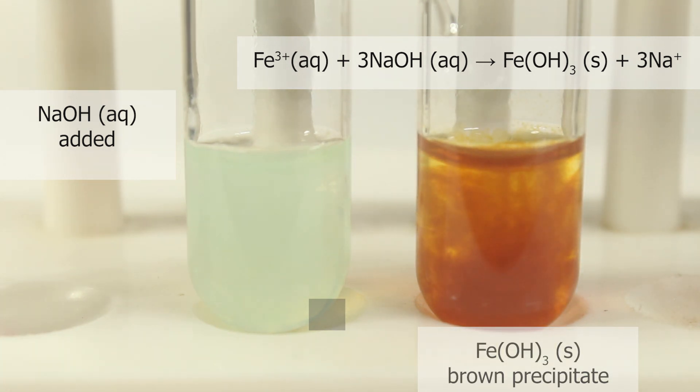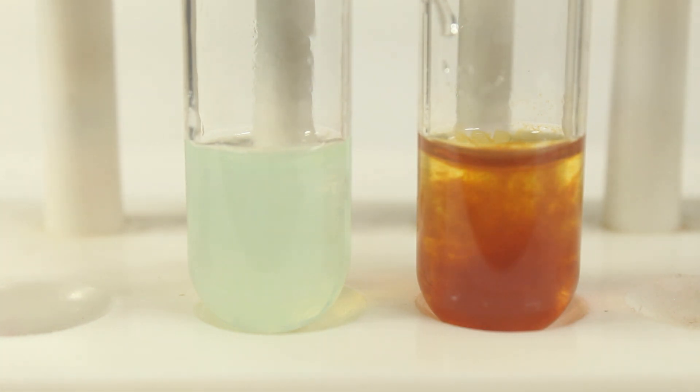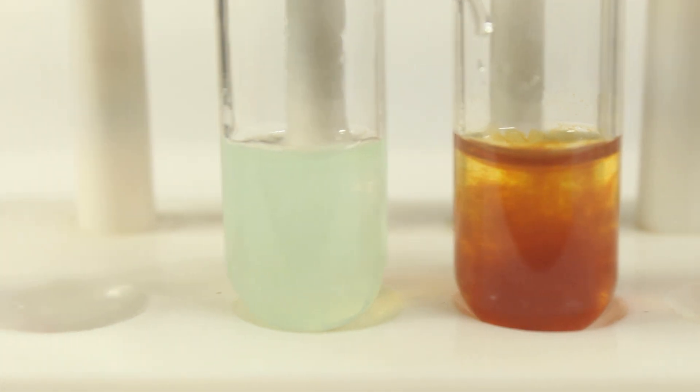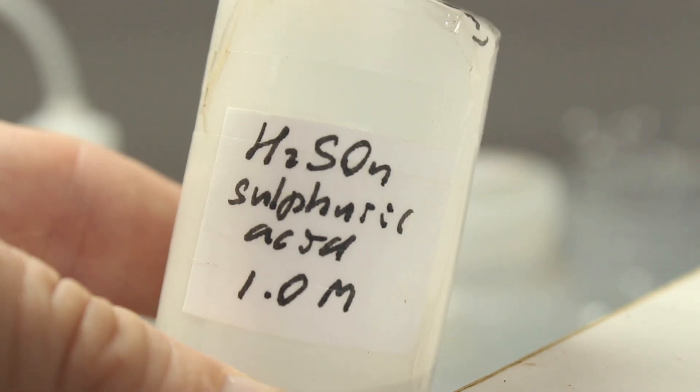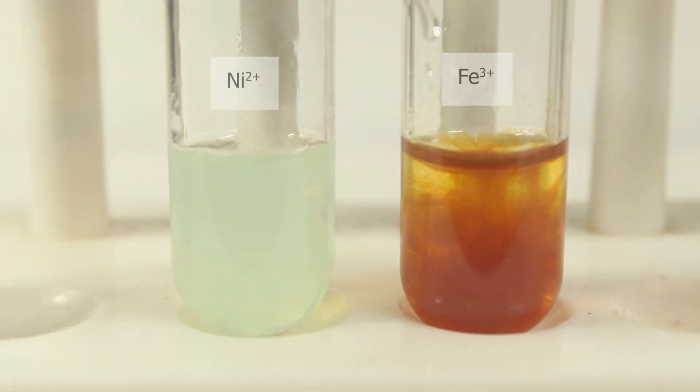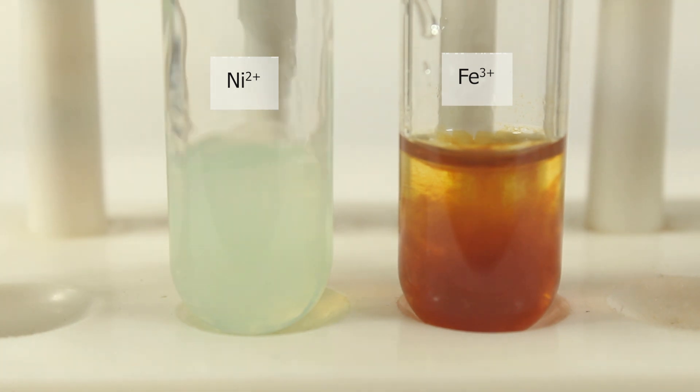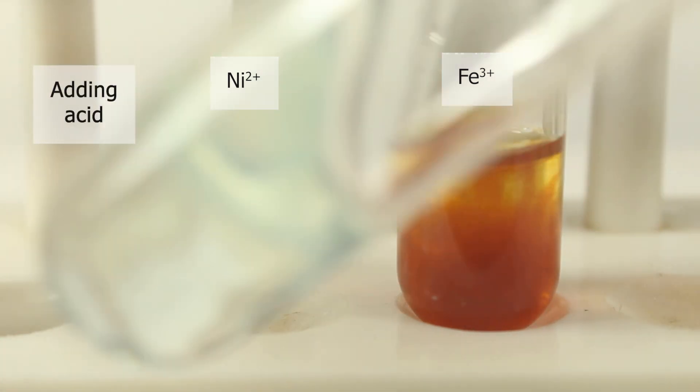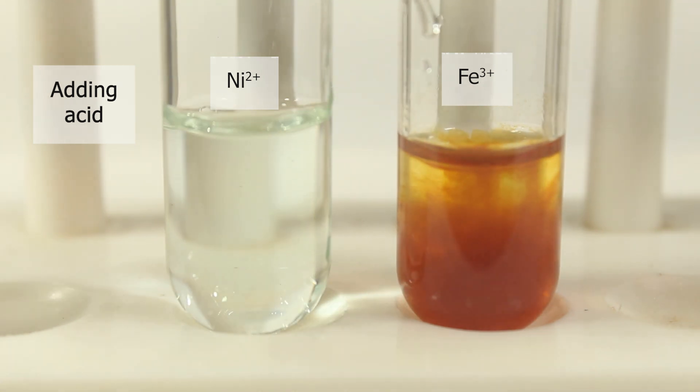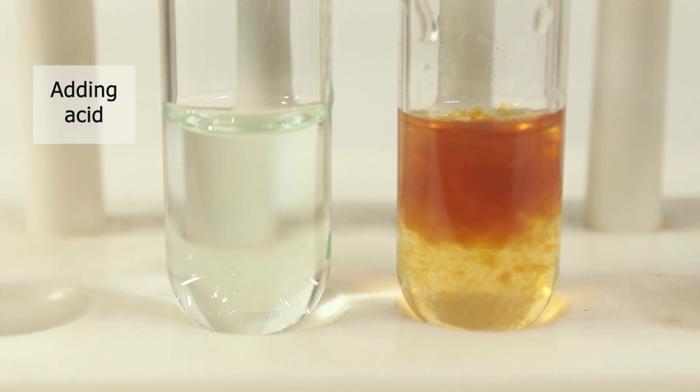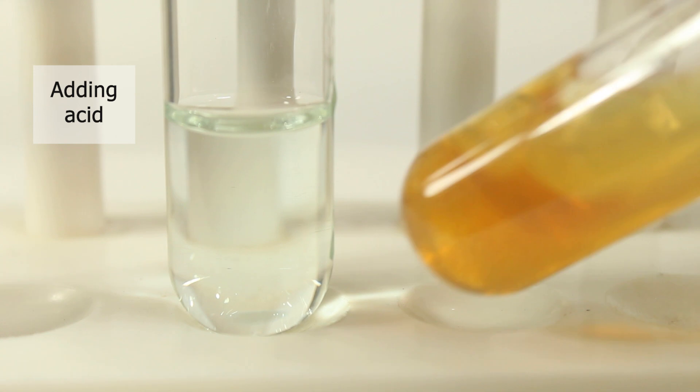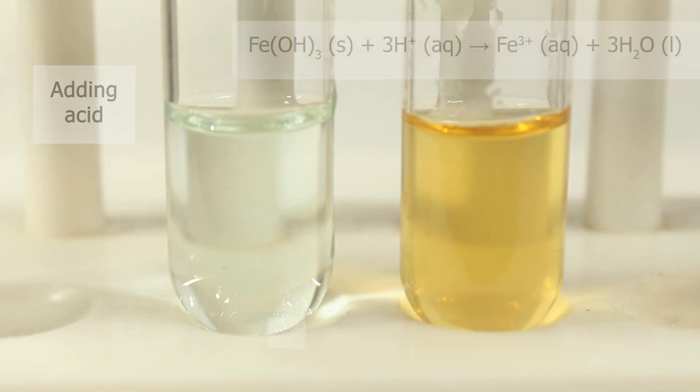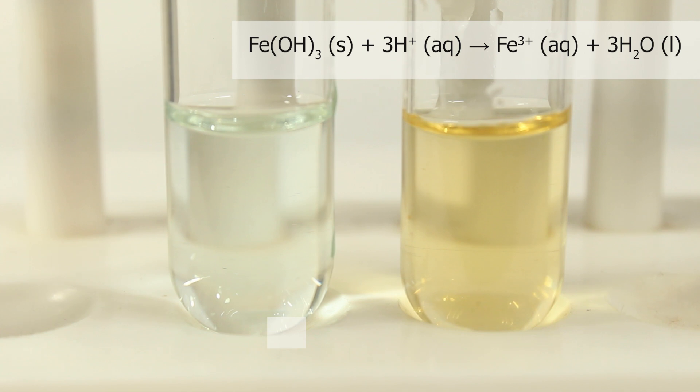We can redissolve it if we add acid to iron-3 hydroxide. Let's take sulfuric acid and see. First start with nickel. Nickel-2 hydroxide readily redissolves in the acid. And here in case of iron-3, we have to wait a little bit. But as well we have just yellow solution back on additional acid.